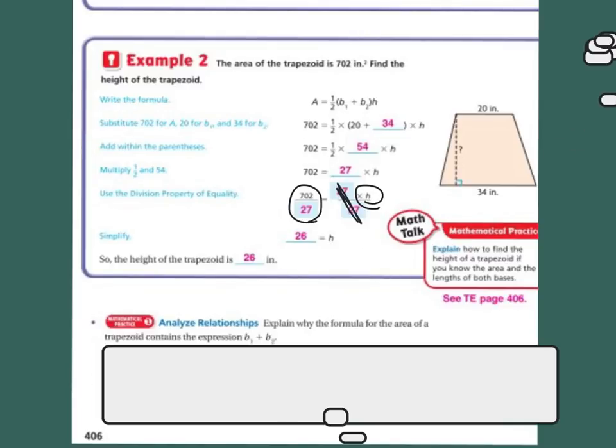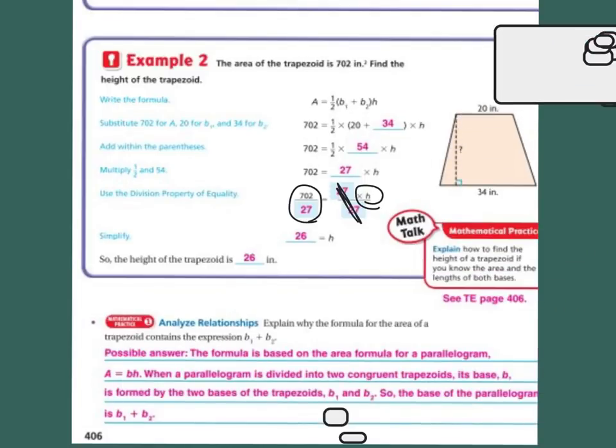Analysis. Explain why the formula for the area of a trapezoid contains the expression B1 plus B2. Well, the formula is based on the area of a formula for a parallelogram. So A equals base times height. That's what we did on Monday. When a parallelogram is divided into two congruent trapezoids, its base is formed two bases, and the trapezoid B1 and B2. So the base of the parallelogram is base 1 times base 2, because remember,